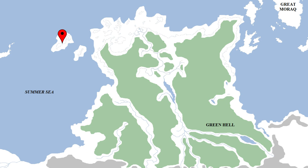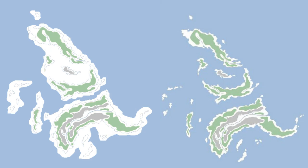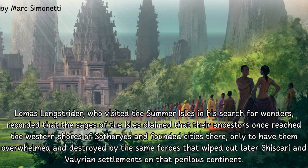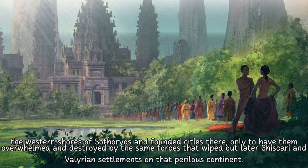Yi Ti is between Essos and the Far East. Naath was always a very isolated place, so I think they were isolated even then — maybe the island was bigger, but still separated from the rest of the lands. Summer Islands were bigger, still islands, just not as many — I'm gonna say three or four bigger ones. Summer Islanders have been excellent seafarers since the ancient days. There are even rumors that before the Giscari or the Valyrians, the Summer Islanders founded cities in Sothoryos. Lomas Longstrider recorded that the Sages of the Isles claimed that their ancestors once reached the western shores of Sothoryos and founded cities there, only to have them overwhelmed and destroyed by the same forces that wiped out later Giscari and Valyrian settlements on that perilous continent. As we can see, the whole planet was quite different.